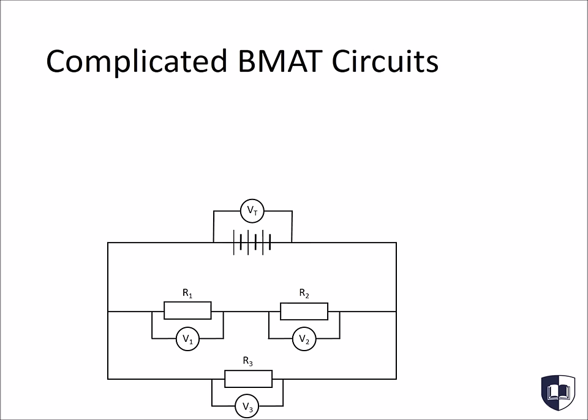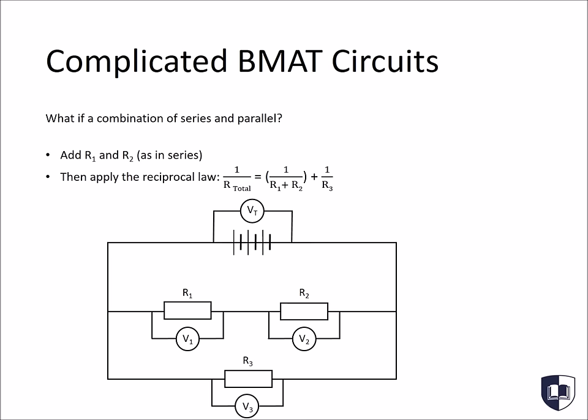But of course, in the BMAT you're unlikely to get a nice and simple series or parallel circuit. And instead, you may face more complicated circuits, which have elements of both, such as this one. So what do you do if you have both series and parallel components within a circuit? The key is to simplify. Try to solve some of the branches in order to make it easier to calculate. So in this case, you have two branches, one containing R1 and R2, and the other containing R3. R1 and R2 are in series with each other, so you can calculate the total resistance of these two first, giving you the value for that branch. You now have a much neater parallel circuit with one component per branch, making it easy to solve.